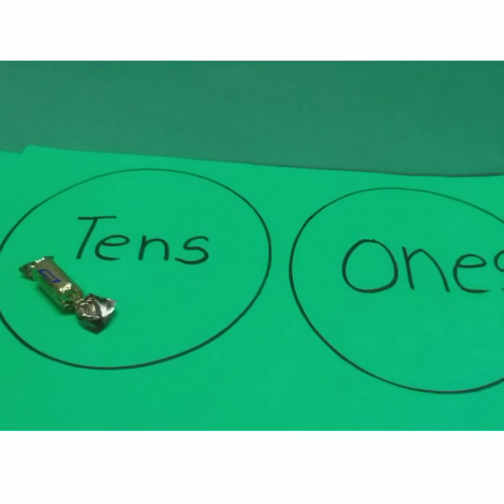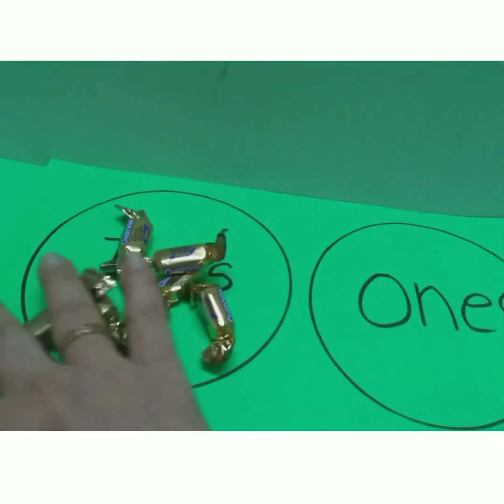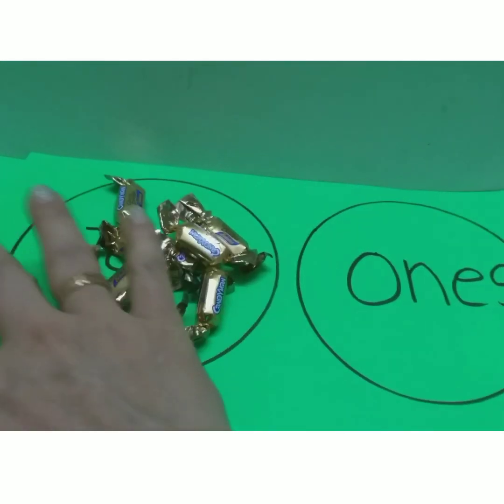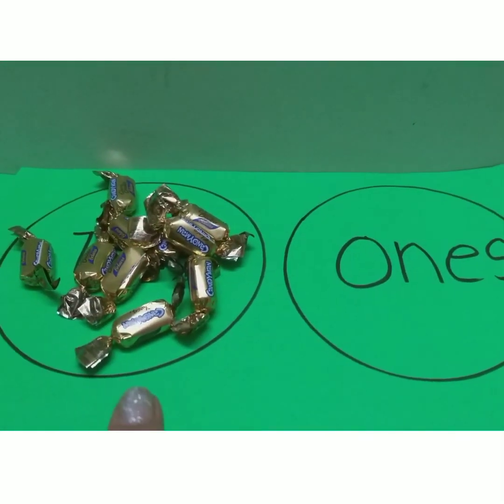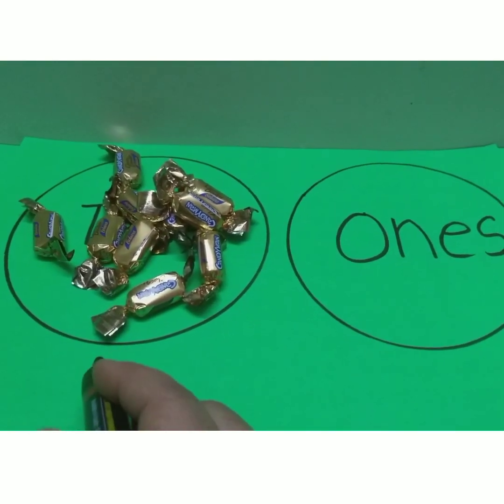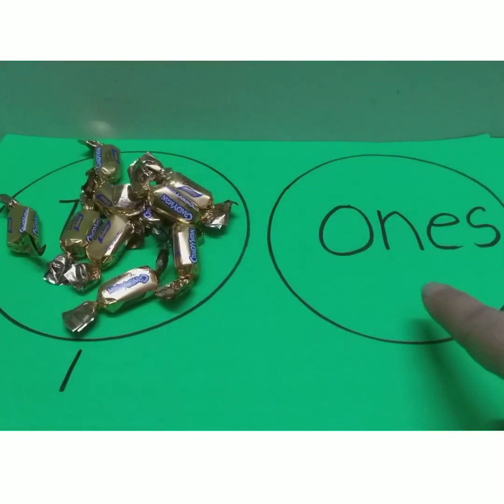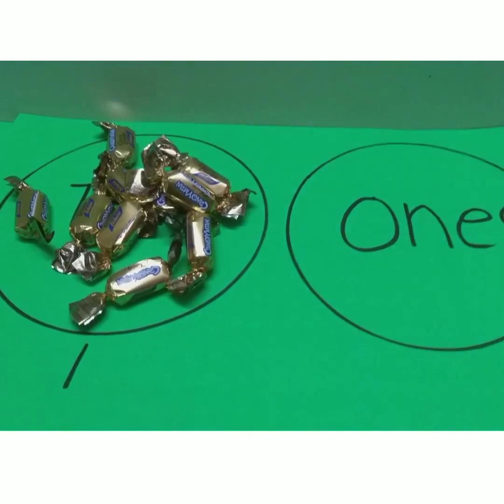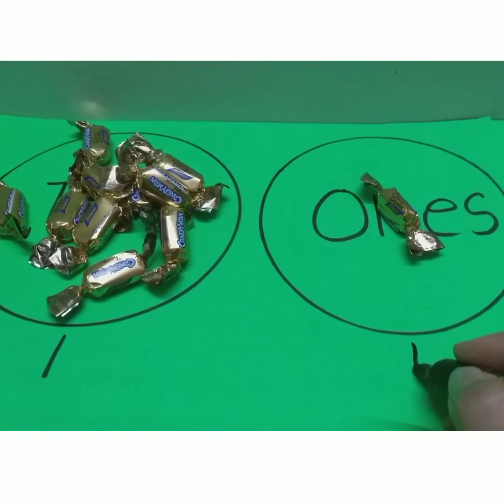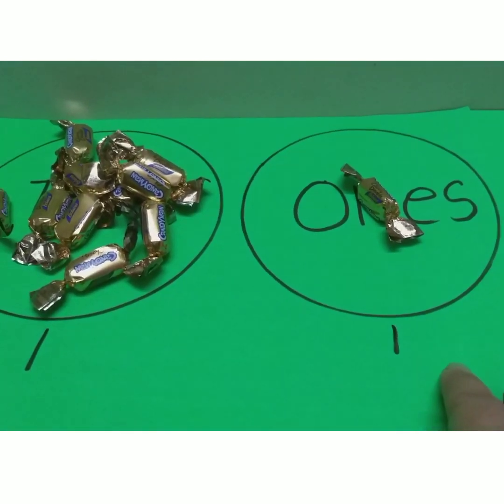One, two, three, four, five, six, seven, eight, nine, ten. That means one ten. And ask the child to write here one. Now one ten. This is one ten. And here instruct the child to keep one toffee. One. So one ten and one one is eleven.